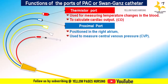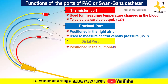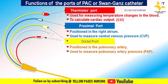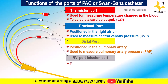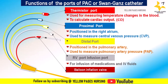Next is the proximal port. This is positioned in the right atrium and is used to measure central venous pressure. Central venous pressure provides information about the filling pressure of the right side of the heart. Next is the distal port — this lumen is used to measure pulmonary artery pressure.